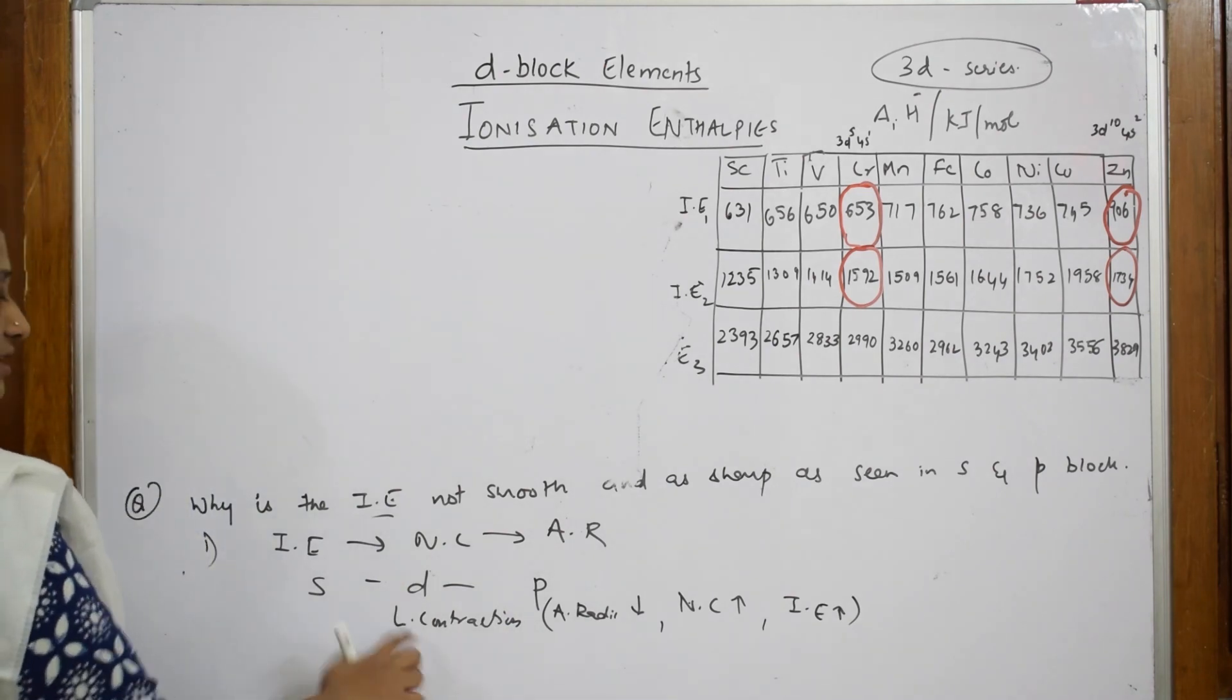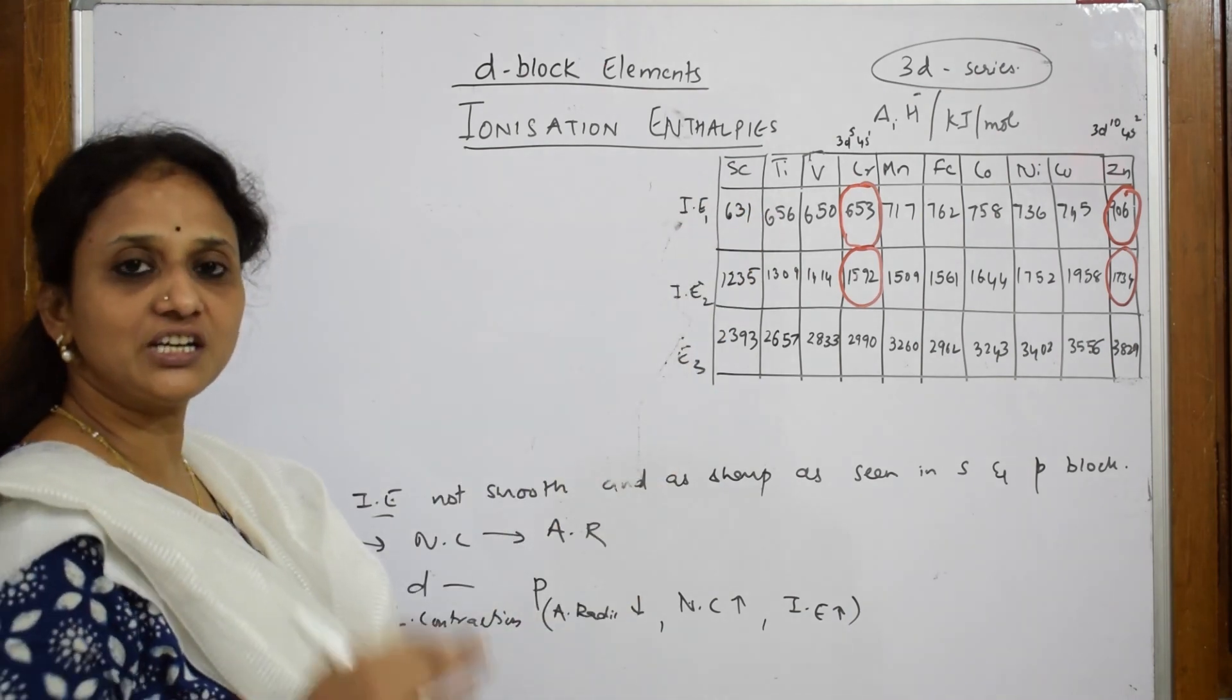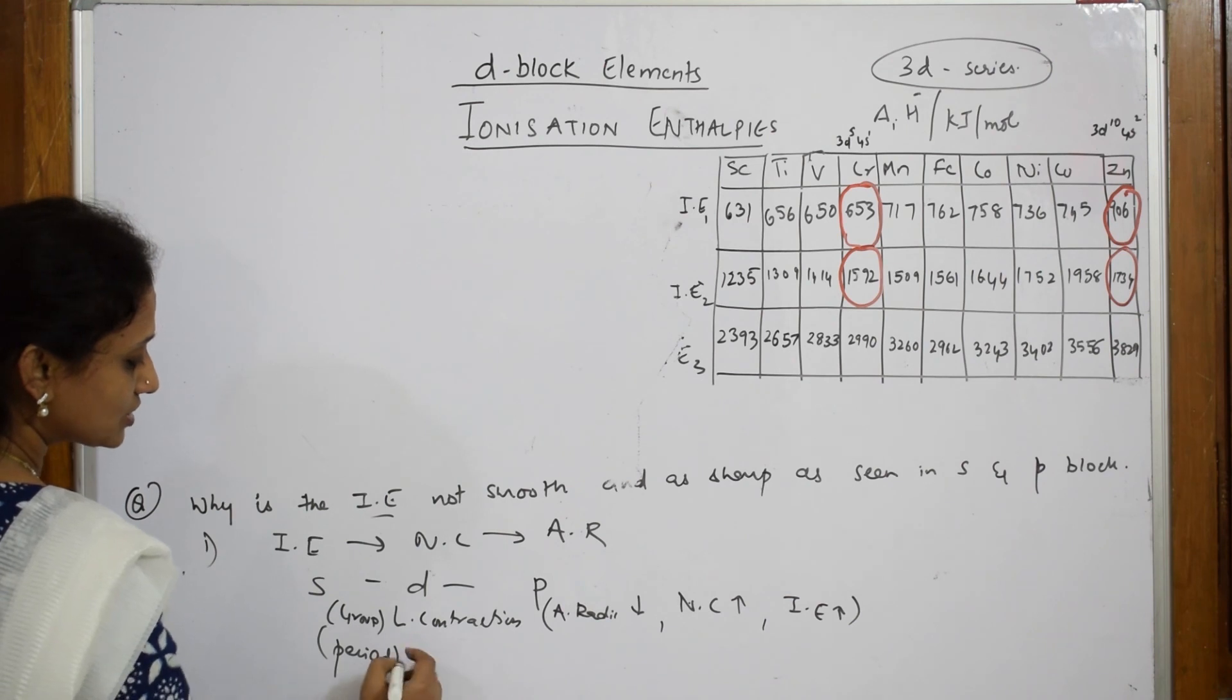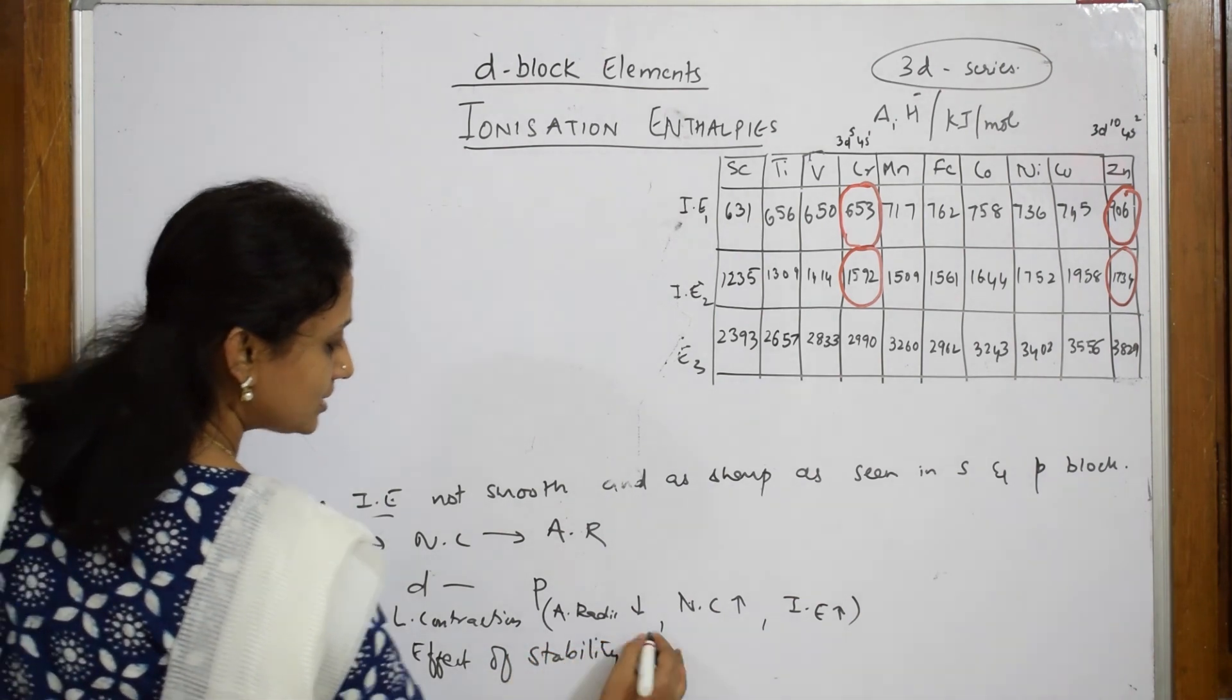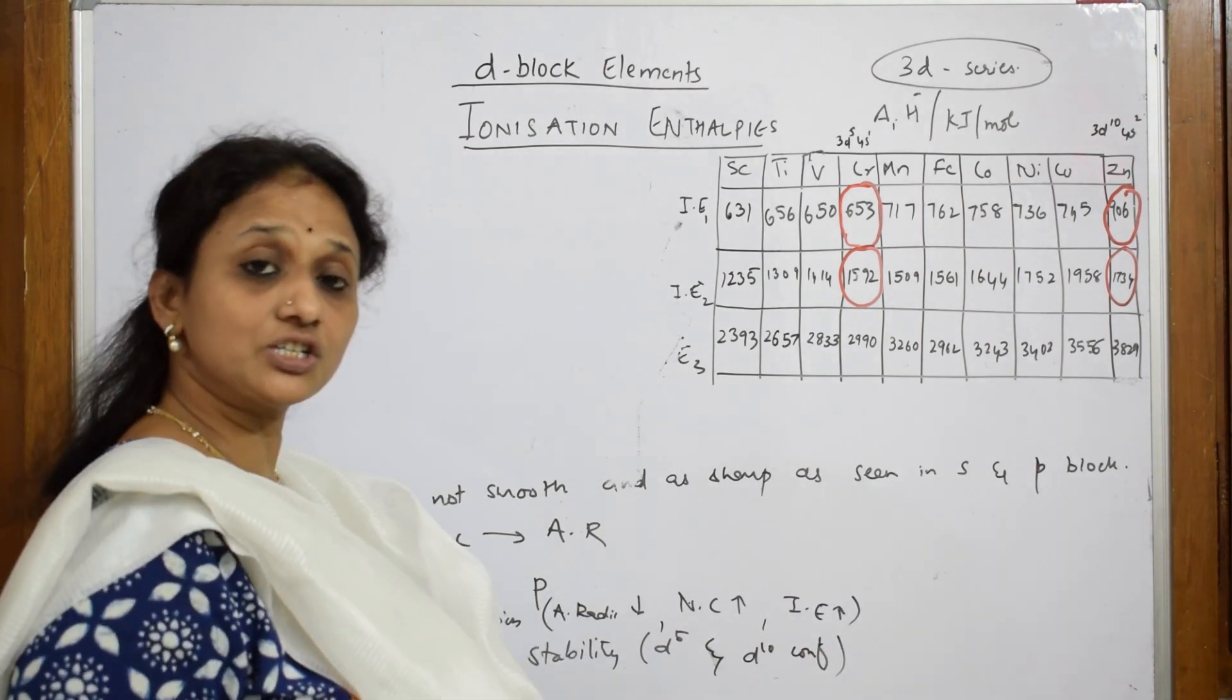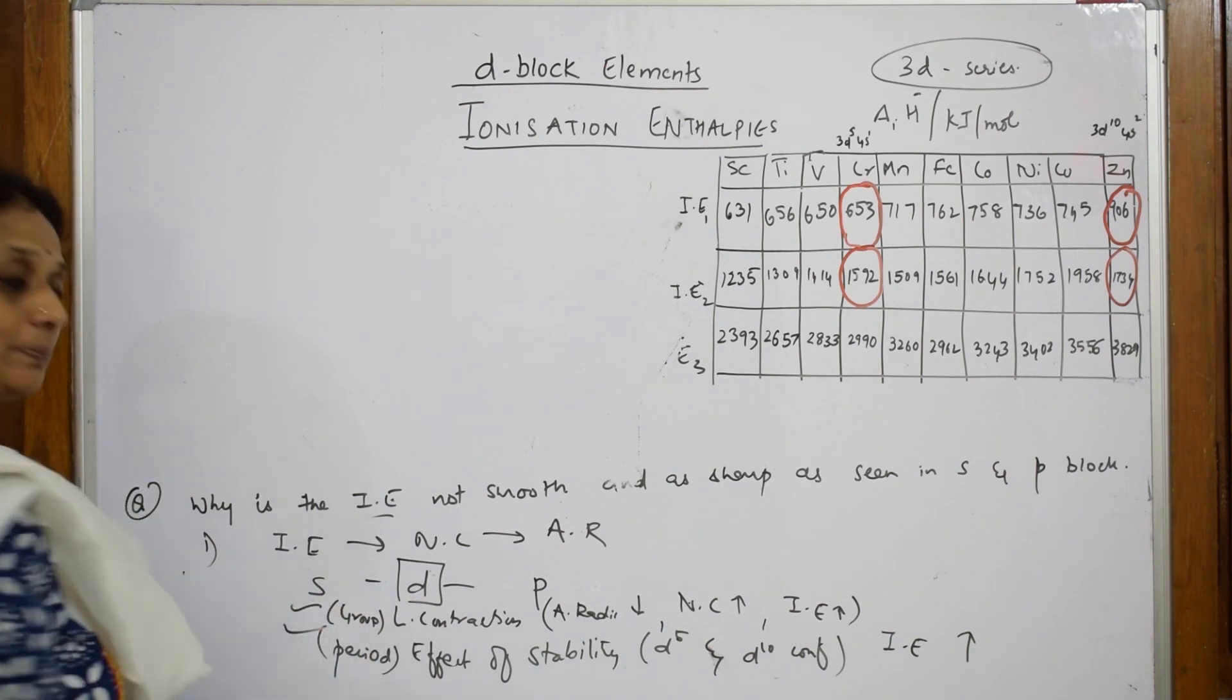This is one concept of d which is varying from s and p. The next important. We have seen this in a group. When I speak about this one in a period, the configuration, d5 configuration and d10 stable configuration. Are you finding that in your s block and p block? No. This d5 and d10 configuration, we can also write effect of stability. Both also affect ionization enthalpy, which is higher. I can generalize d block giving these two concepts along a period and along a group.